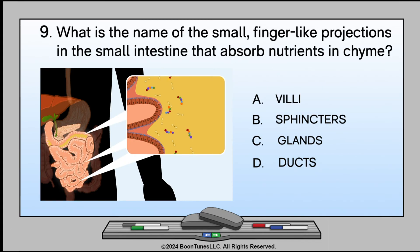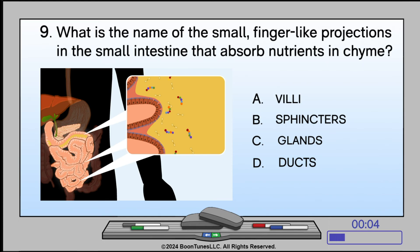What is the name of the small, finger-like projections in the small intestine that absorb nutrients in chyme? A. Villi. B. Sphincters. C. Glands. D. Ducts. The answer is A: Villi.